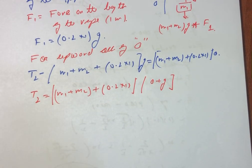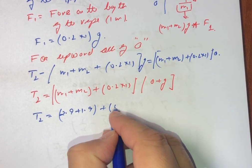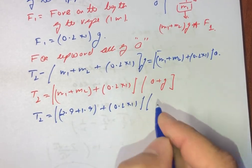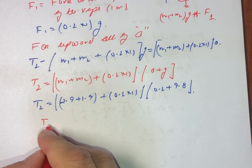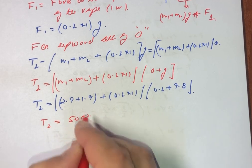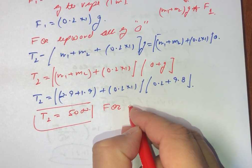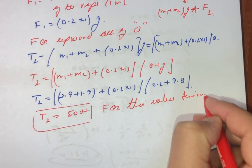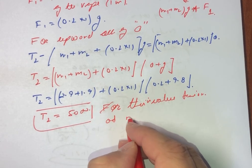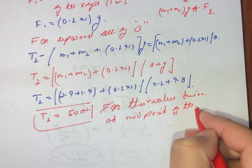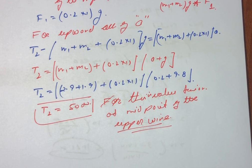Substituting the values: T2 = (1.9 + 0.9 + 0.2 × 1) × (0.2 + 9.8) = (2.9 + 0.2) × 10. Solving this, we get T2 = 50 Newton. This is the value of the tension at the midpoint of the upper wire. This completes the question.